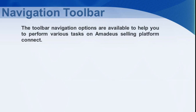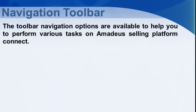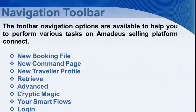The toolbar navigation options are available to help you perform various tasks on Amadeus Selling Platform Connect. Toolbar options include: New Booking File, New Command Page, New Traveler Profile, Retrieve, Advanced, Cryptic Magic, Your Smart Flows, and Login.